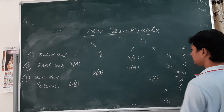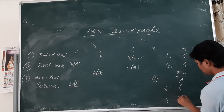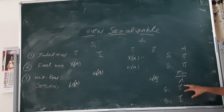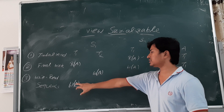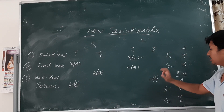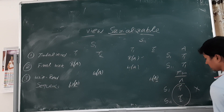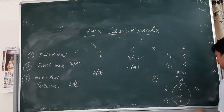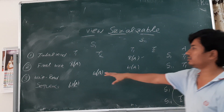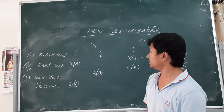There are two write operations in each schedule. In S1, the final write is done by T1. In S11, the final write is done by T2. Since the final write is not done by the same transaction — T1 in S1 versus T2 in S11 — this condition is not met. If any one condition is not met, the schedules are not view equivalent.